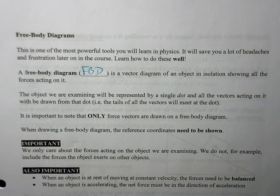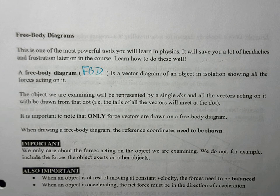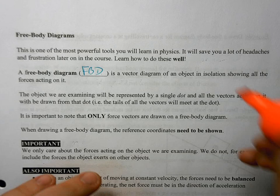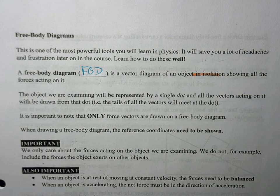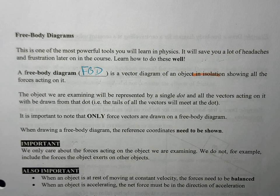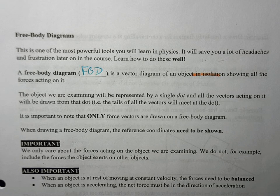An FBD is a vector diagram, and it's going to be a vector diagram of an object in isolation. What we mean by this is the object that we're looking at, we're going to assume it's literally the only thing in the universe, and we're going to examine the forces acting on it.